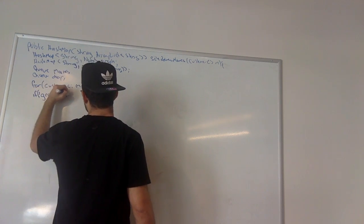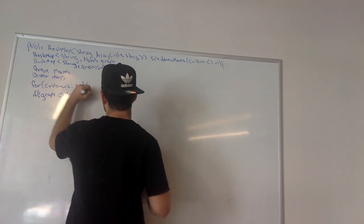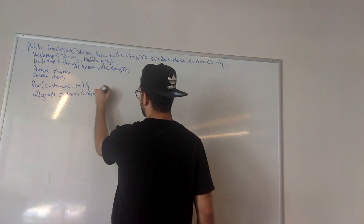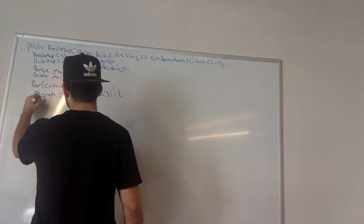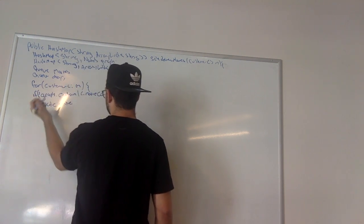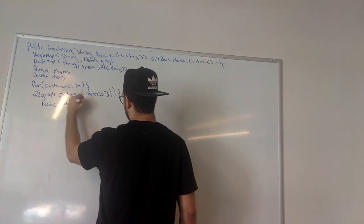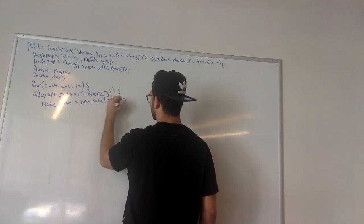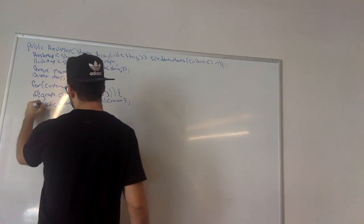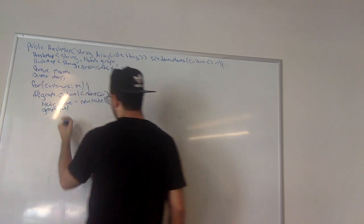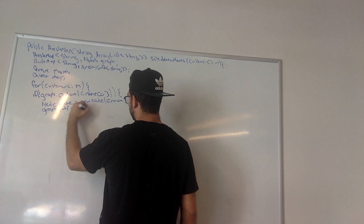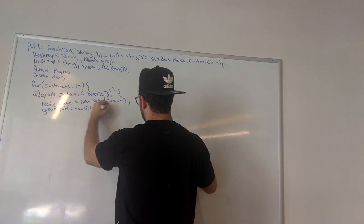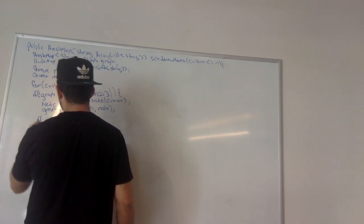If the graph doesn't contain the first movie title from the customer's movies, we're just going to create a new Node initialized with that first movie title, and then put that node in the graph. The key is the name of the movie and the value is the node. Now we're going to do the same thing for the second movie.